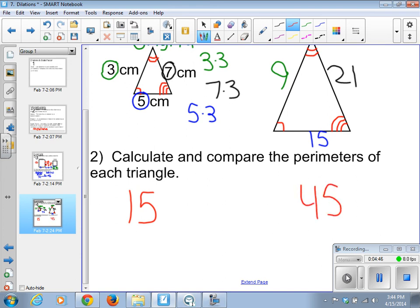How do we get from 15 to 45? Multiply it by 3. So the scale factor, again, of the perimeter is the same as the scale factor of the side lengths.